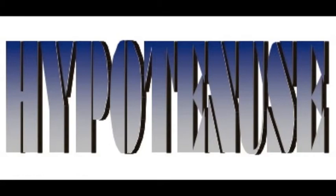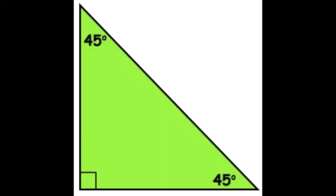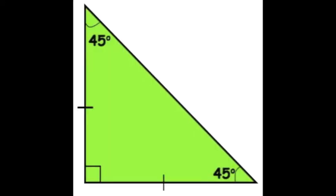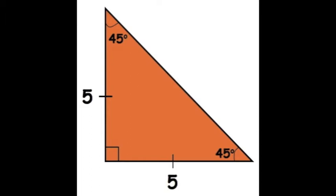Special triangles by degrees. First of all, 45-45-90 — two angles are the same, isosceles. X, X, X-root-2 is the key. Need some explanation? Here's a sample: say the legs are 5 in this example. So what's the length of the hypotenuse? Use the rule, you will see it's 5-root-2.